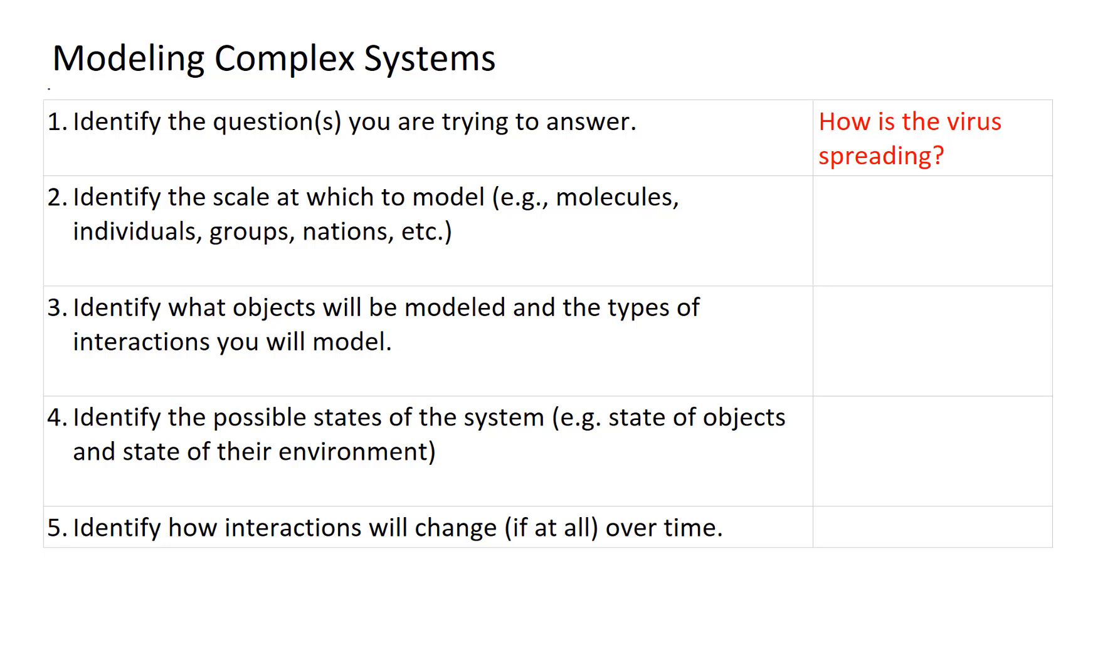Number two, identify the scale at which to model. Now, if we're interested in a virus like the flu, we could certainly model that at the molecular level. We could model that in terms of what's happening within one organism, within one individual. Or we could look at what's happening in groups, people that go to the same school or nations, and so forth.